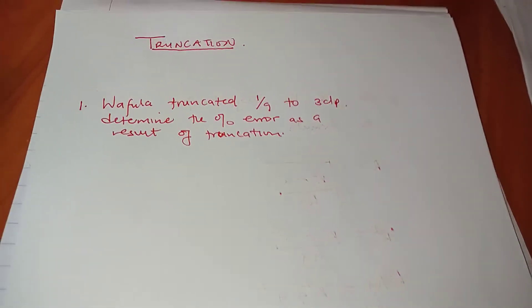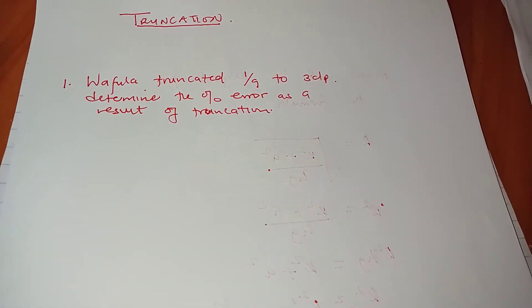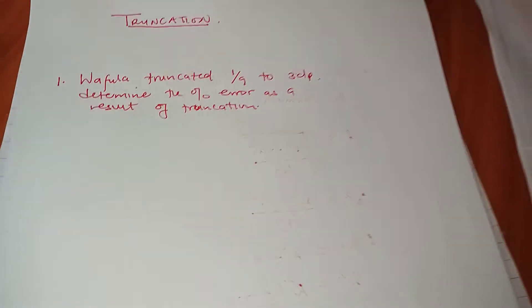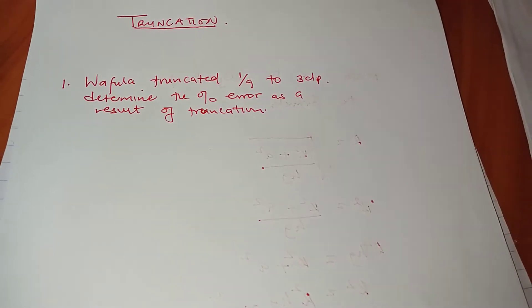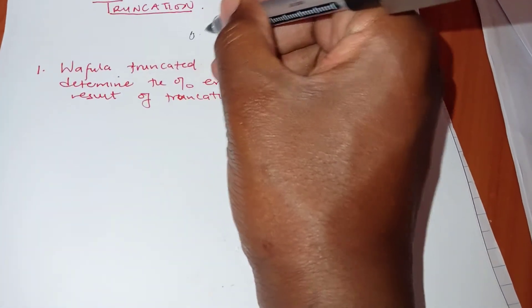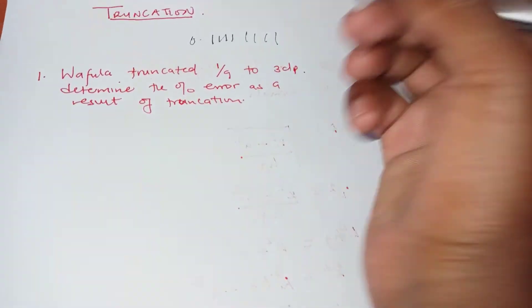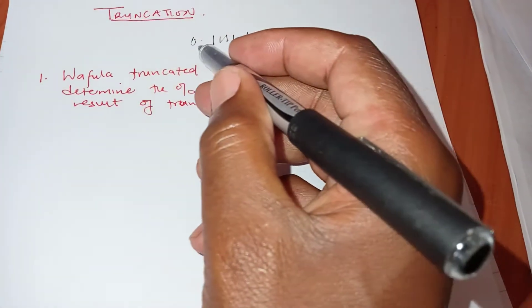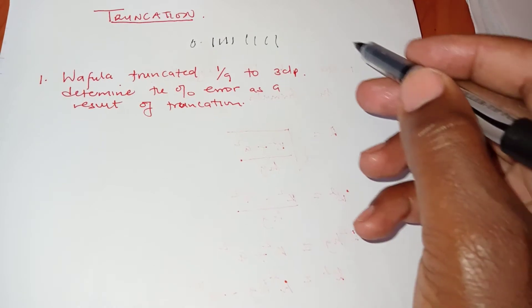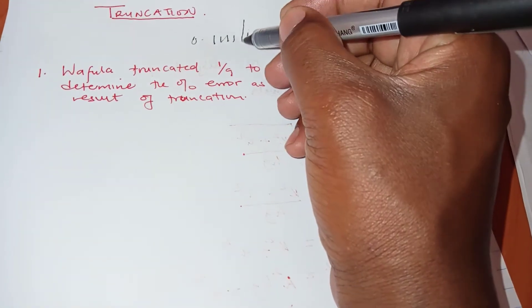Truncation is where you have digits and you chop them off according to some certain criteria. For example, you can have numbers like 0.11111111 and you decide that because this number is very long, you cut up to this point.